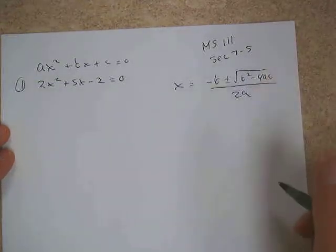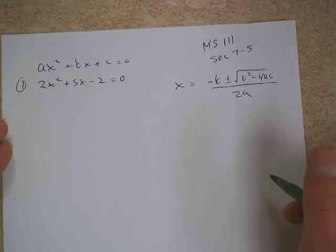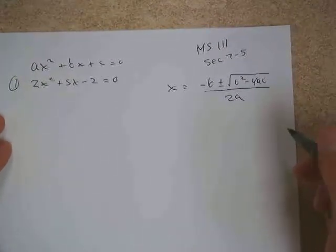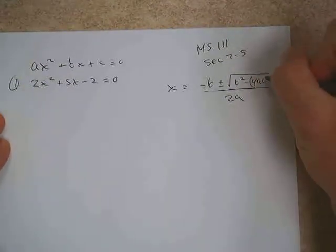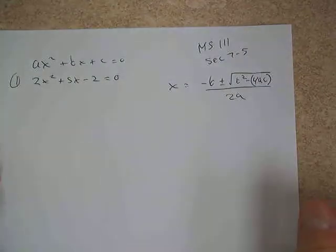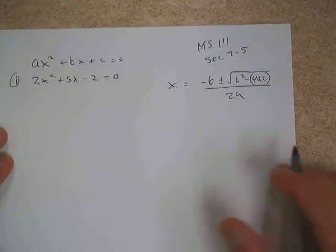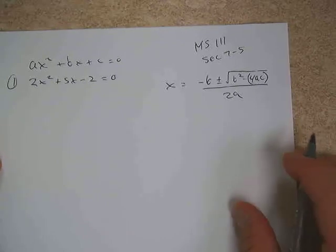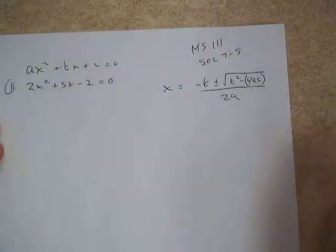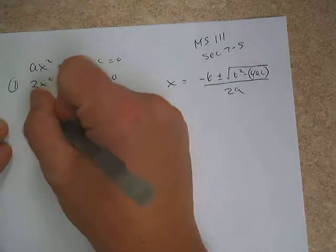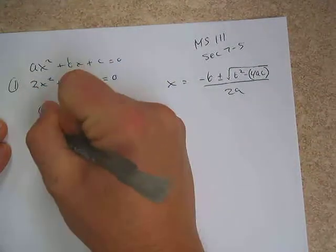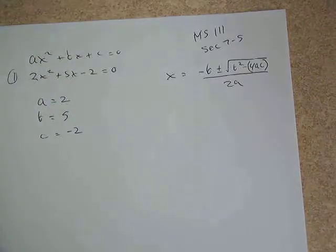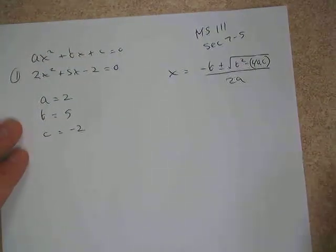Here's the order in which I would do this — if you follow this order carefully, it's much easier to get correct each time. One thing they don't usually put in the book: I would put the 4ac part in parentheses. Be careful with parentheses because you get negatives and subtracting negatives — people generally make mistakes by not keeping track of that. So step one: list a, b, and c.